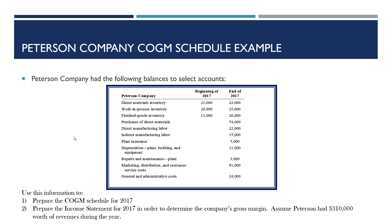For a manufacturing company, the process of figuring out not only what amount of cost went into the production of product during the period, but what portion of those costs you can expense as cost of goods sold when the product is actually sold, is a multi-step process. The first thing you need to do is prepare your cost of goods manufactured schedule, which tells you the amount of cost contained in units you finished producing during the period. You then transfer it to the income statement to figure out what amount of those inventoryable product costs can be expensed under cost of goods sold.